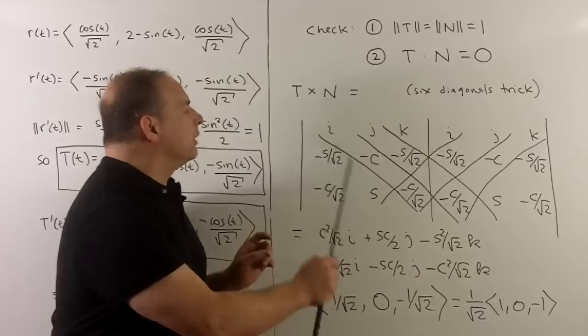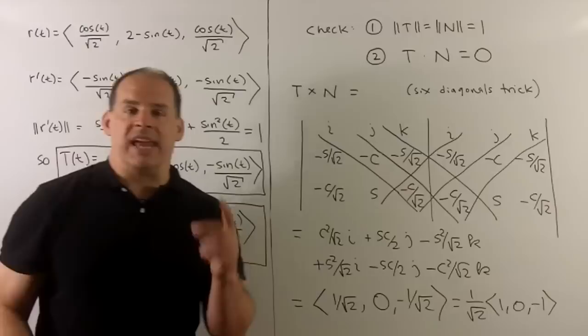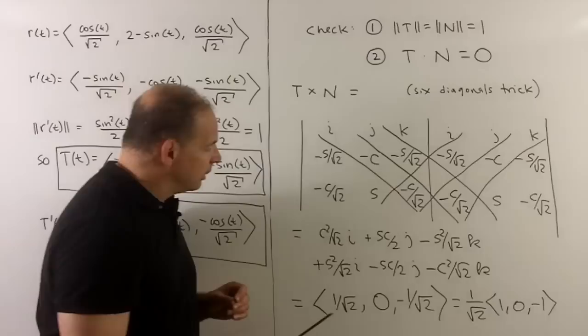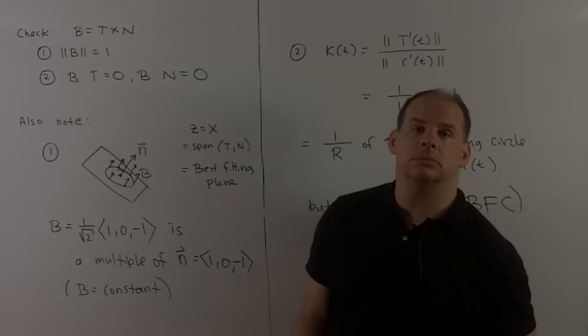So the diagonals going to the right, we'll multiply down the first three, keep the signs. For the next three diagonals going to the left, we'll multiply down, change the signs, and then we add all those terms. So when we do the work, we're going to get this vector: ⟨1/√2, 0, -1/√2⟩, and that's just going to be a multiple of the normal vector for the plane.